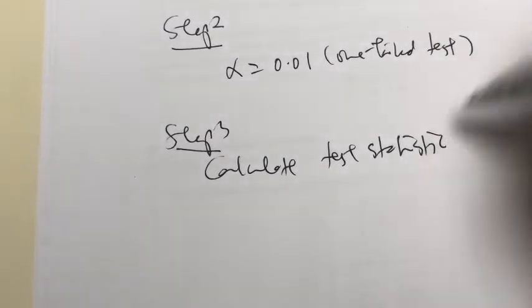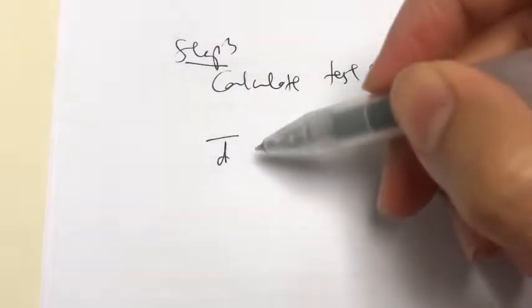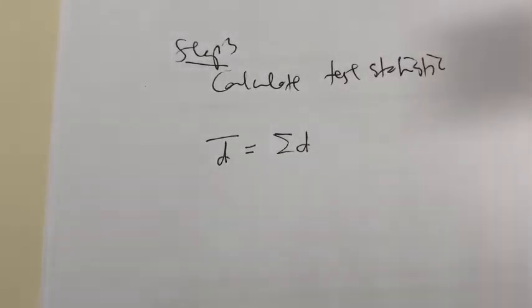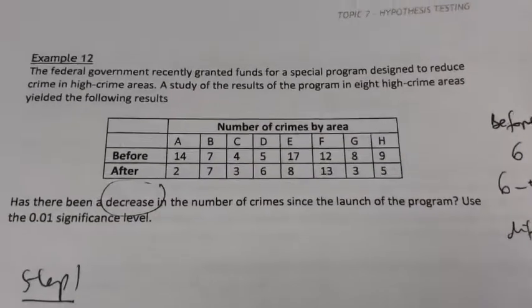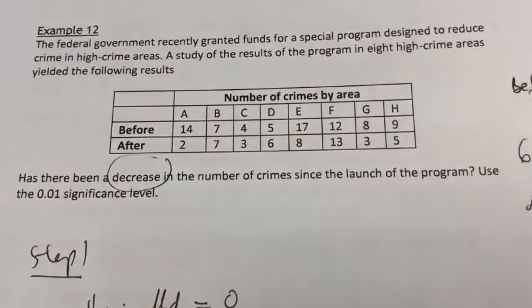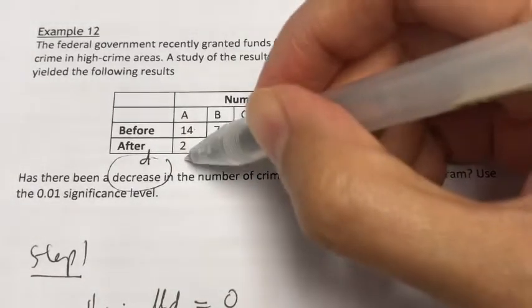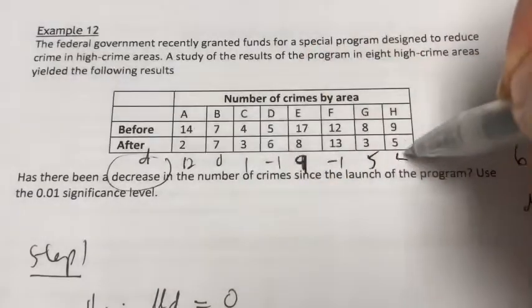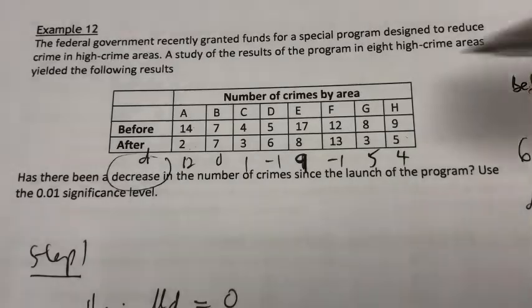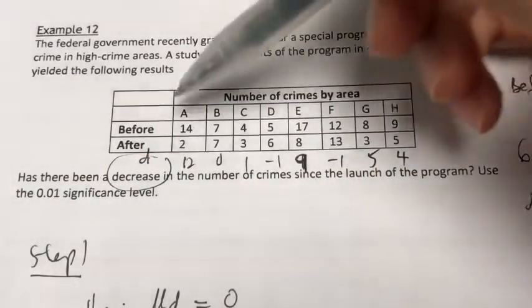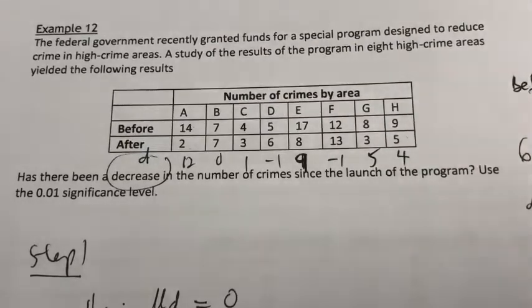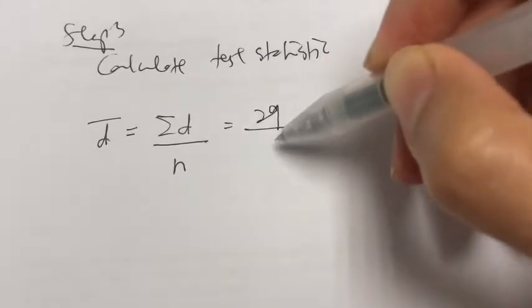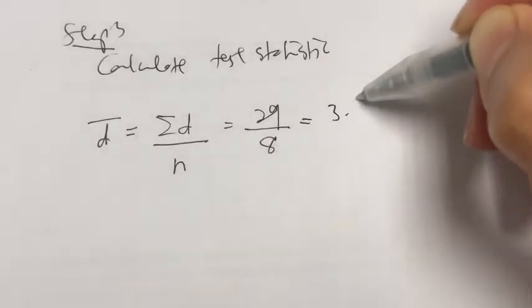Calculating the test statistic. We need to find the mean difference D-bar — the sum of all differences for each case divided by the total number of cases. You find the difference D for each area: 14 minus 2 equals 12, 7 minus 7 equals 0, 4 minus 3 equals 1, and so on. Add up all these values to get 29, then divide by 8 crime areas. So the mean difference D-bar equals 3.625.